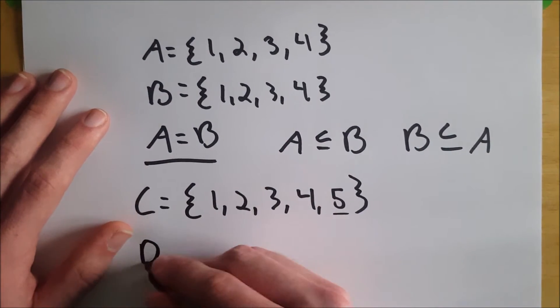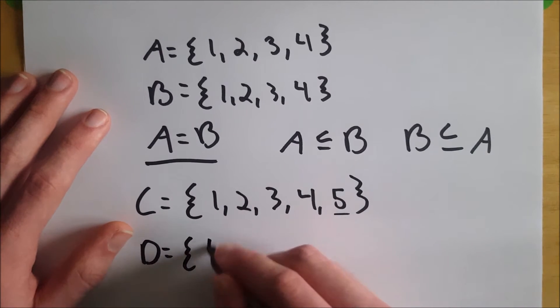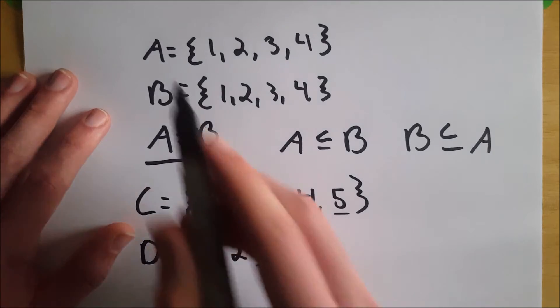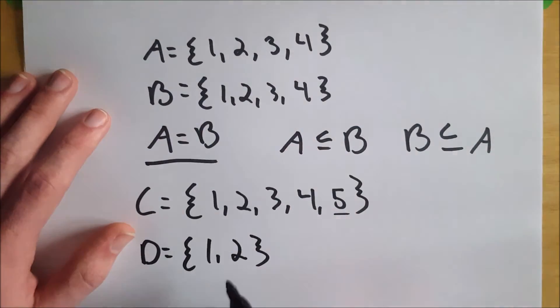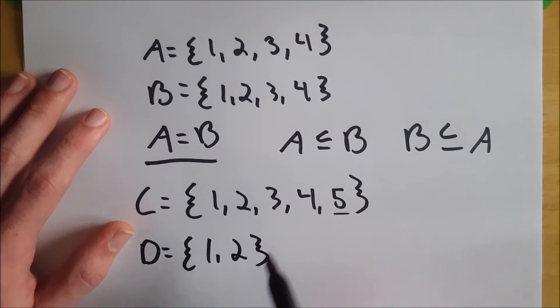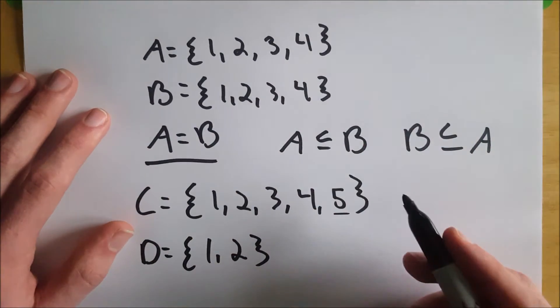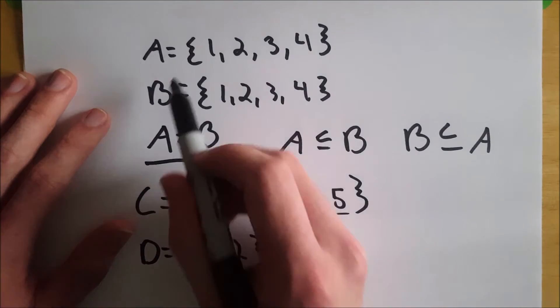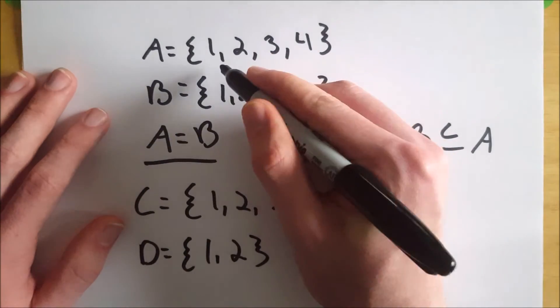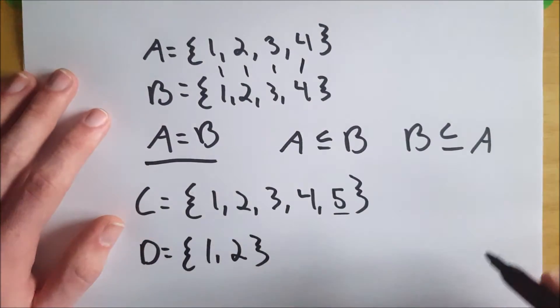And then if we look at set D, which we'll say has 1 and 2, set D is a subset of A and B because A and B both contain 1 and 2, but A and B are not subsets of D because D does not contain 3 and 4. Therefore, this set is not equal to these sets, and this set is not equal to these sets. They have to have exactly the same elements.